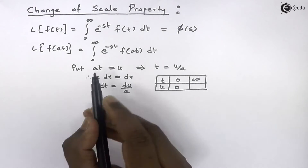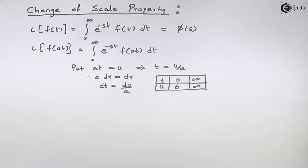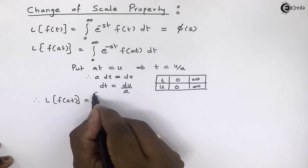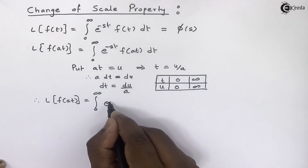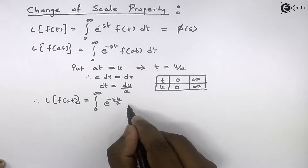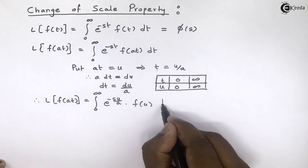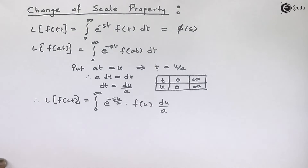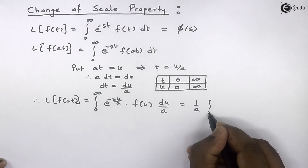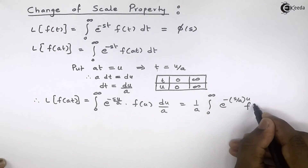Similarly, when t is equal to infinity, u becomes infinity times a, which is infinity. So the limits are not changing in u — they remain 0 to infinity. Therefore the Laplace transform of f(at) becomes the integral from 0 to infinity of e raised to minus s times u upon a, times f(u), times du upon a. The constant 1 upon a is taken outside the integration.